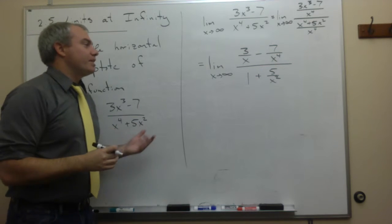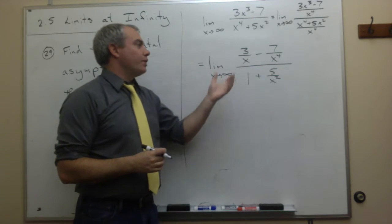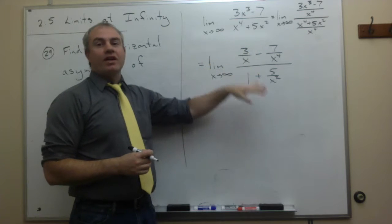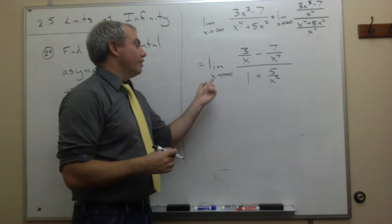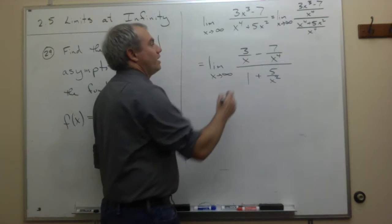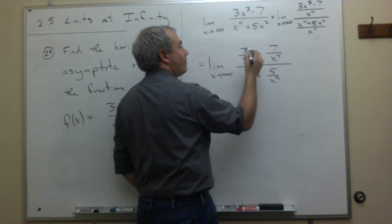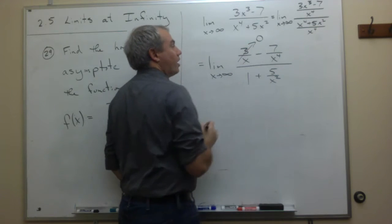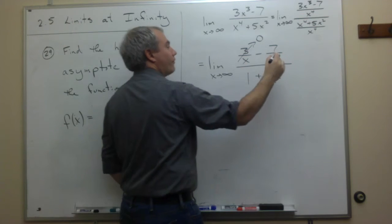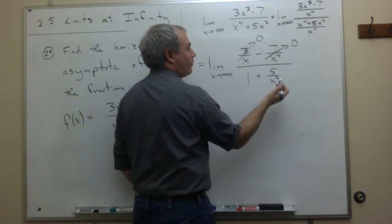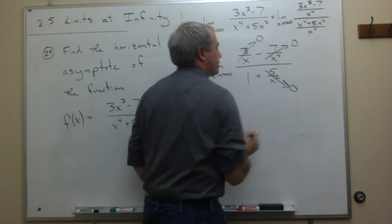Now we can take the limit as x goes to infinity, and we don't get some form like infinity over infinity, which we really can't work with. If we let x go to infinity now, 3 over a very big number is going to 0. 7 over a very big number is going to 0. And 5 over a very big number is going to 0.